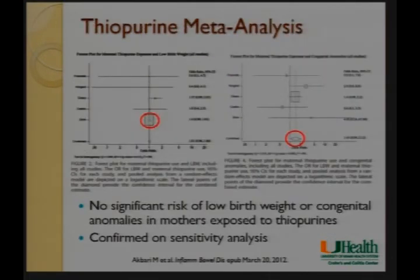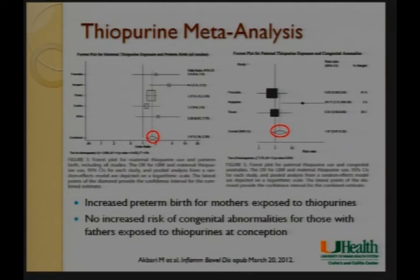The CESAME data postulates that findings of lower birth weight and higher prematurity from previous studies were probably from disease activity, not the thiopurine — which is actually more reason to give the thiopurine, because you're trying to suppress disease activity and allow the woman to take her baby to term as healthily as possible. In a large meta-analysis not yet published in print, the risk of low birth weight and congenital abnormalities on thiopurines was not statistically significant — though there was a slight increased risk of preterm birth.